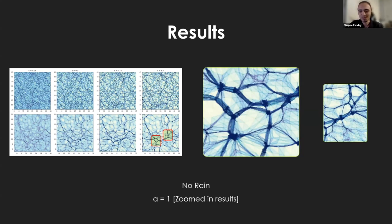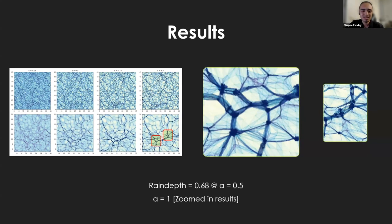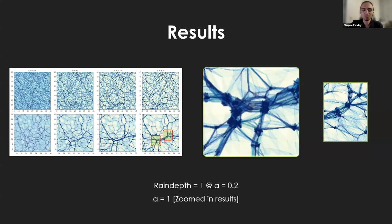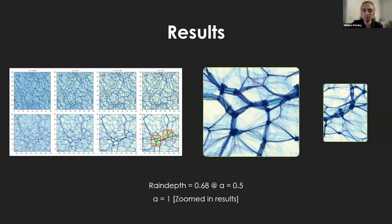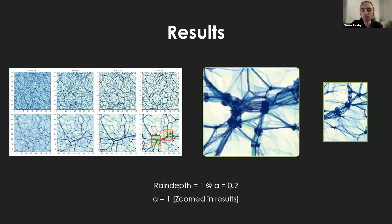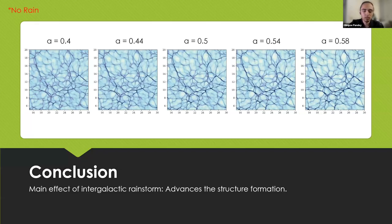As we can see, when we introduced a rainstorm at a equals one, which is the present time, we see that the structures are a little bit more developed. The third simulation is one of the fun ones that we did, which is at a higher rain depth but we implemented it at a relatively early universe. As we can see, the structure evolution is far more evident; the collapse is far more evident on this one. We can visualize the effects of a cosmic rainstorm.